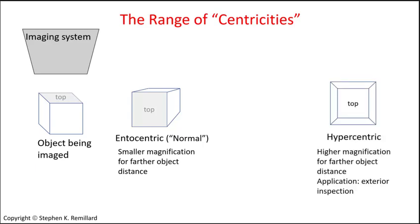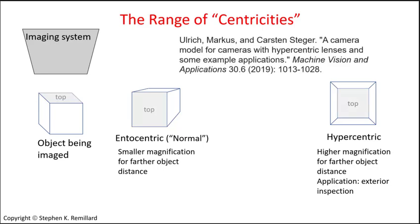A consequence of hypercentricity is that farther objects appear to be larger, or rather have larger magnification. You can see how this can be used to inspect the exterior of a part. A hypercentric camera looking head-on to a cube will better reveal the sides of the cube, because the footprint becomes larger for planes farther away from the top. If there's writing on the side of the cube, you can actually read it from above with a hypercentric lens.